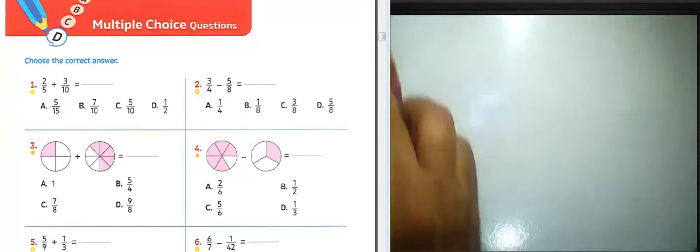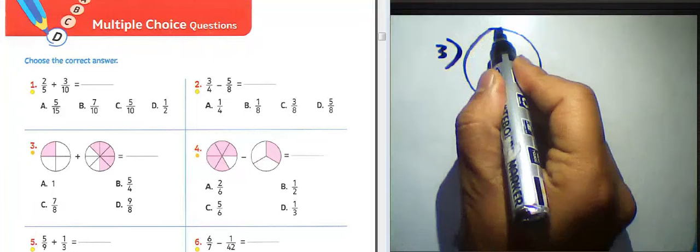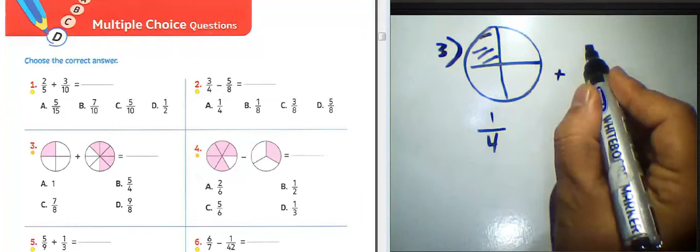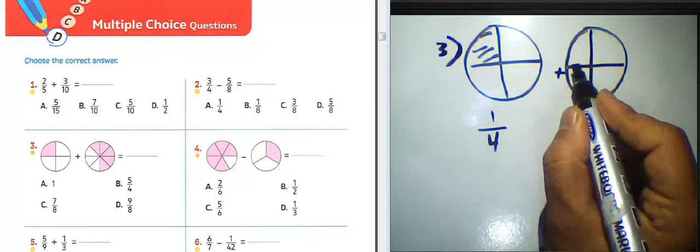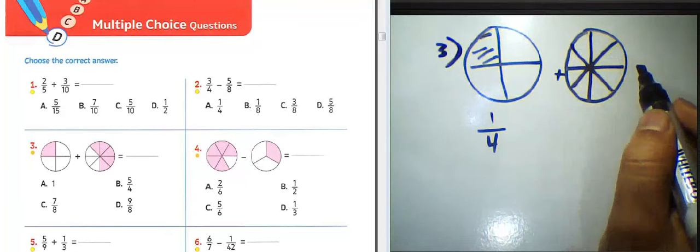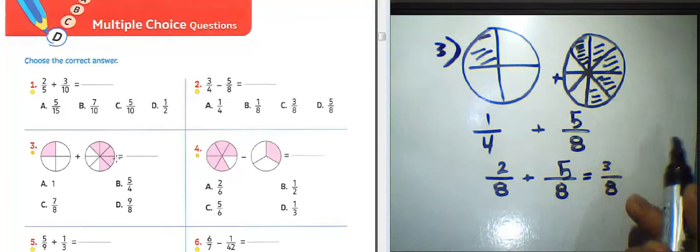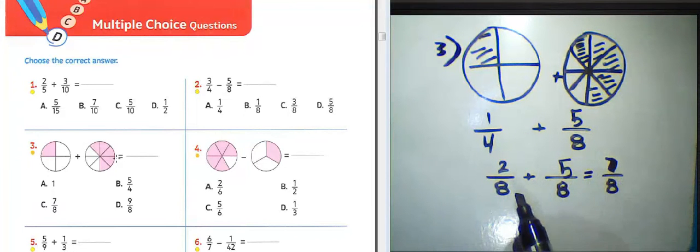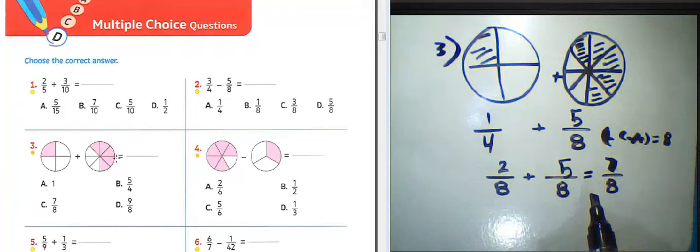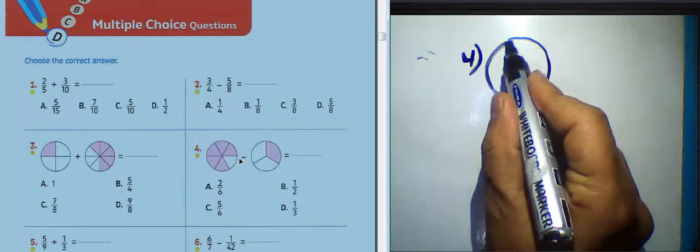Look at question number three. He colored one part of 8 parts — count with me: 1, 2, 3, 4, 5, 6, 7, 8 — so that is 5 parts over 8. Then 5 plus 2 equals 7, so the result here is found by finding the least common multiple between them, which equals 8. You must choose option C about question number three.